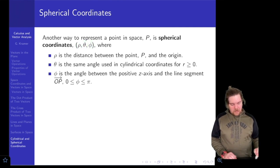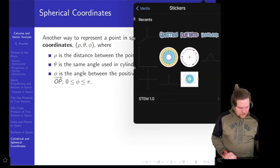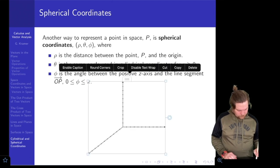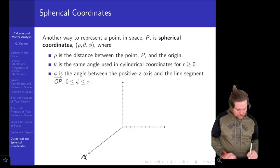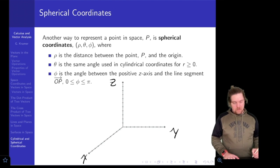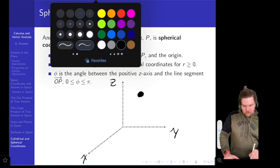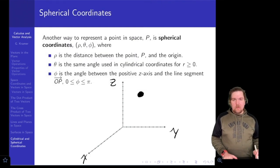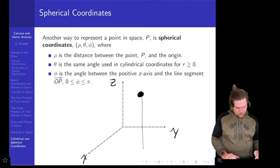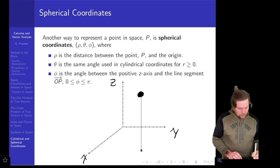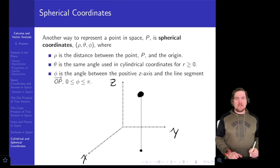Let's think through what each of these represent via a picture. Starting with a three-dimensional coordinate system, we can label our axes x, y, and z, and choose a point in the first octant. To get a better feel for where this point is, I'm going to draw a perpendicular down to the xy coordinate plane, and label the projection down in the xy plane.